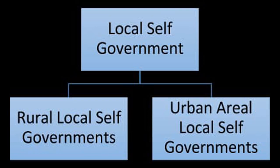There are historical records of local self-government under Mauryan administration. Lord Ripon was the father of local self-government because he laid its foundation in modern times. Under the Government of India Act 1935, provincial autonomy was introduced, coming into force in 1937. In provinces where Congress formed government, rural development received special attention, as Panchayat Raj institutions were an essential part of Gandhiji's programs.